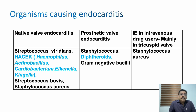Organisms that routinely produce infection on native valves include Streptococcus viridans and the HACEK group organisms: Haemophilus, Actinobacillus, Cardiobacterium, Eikenella, and Kingella — together called the HACEK group. Also Streptococcus bovis and Staphylococcus aureus including MRSA. For prosthetic valve endocarditis: Staphylococcus, diphtheroids, and gram-negative bacilli.